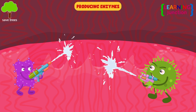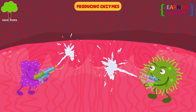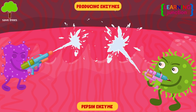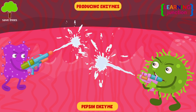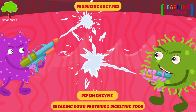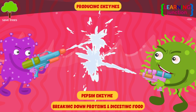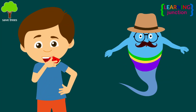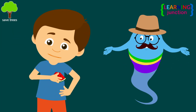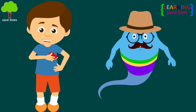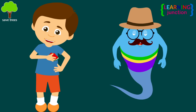Producing enzymes. Stomach cells produce pepsin, which is the main gastric enzyme for breaking down proteins and digesting food. It's good that you're munching into something healthy, which is going to make your stomach happy.